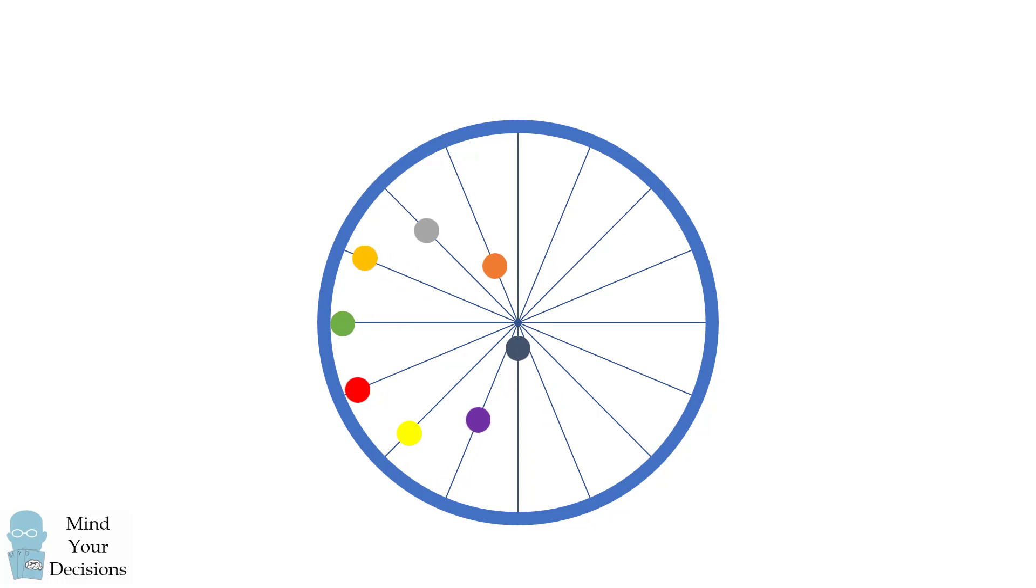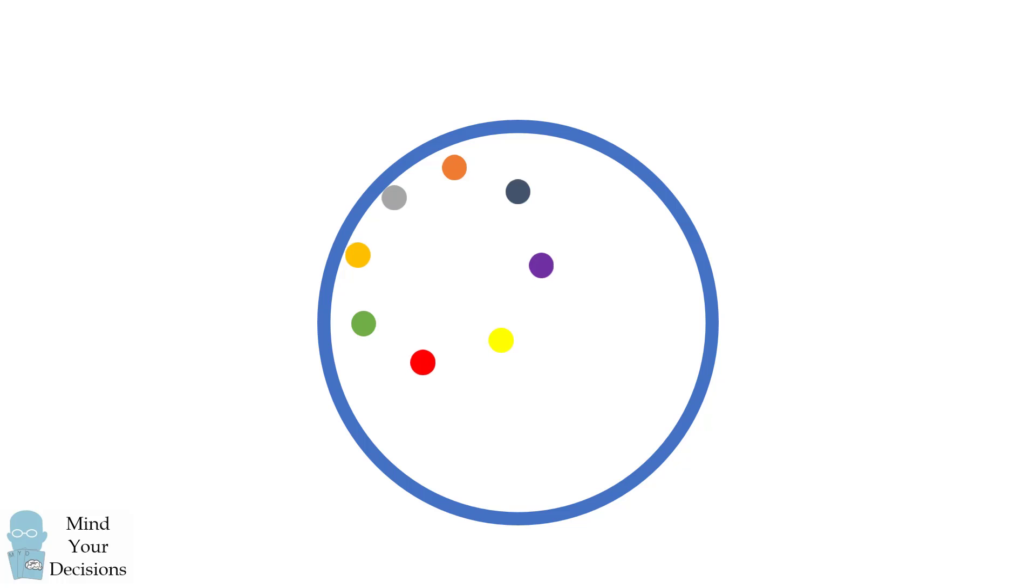Together, all the dots appear like they're moving like a circle that's rolling around. And in fact, when I remove the lines, it does appear like we have a circle that's rolling inside of the larger circle.